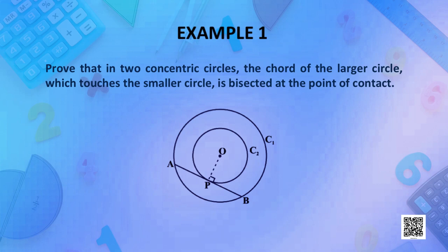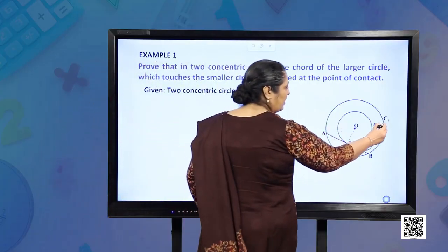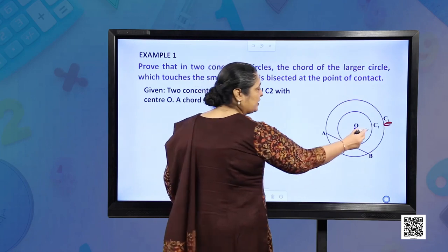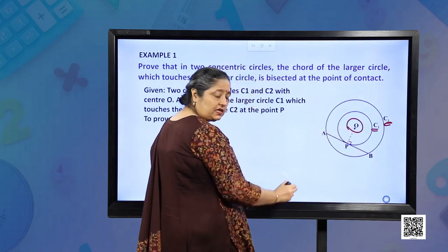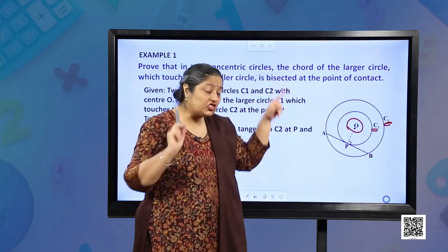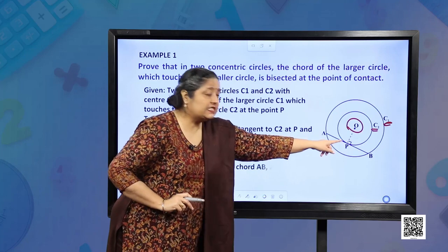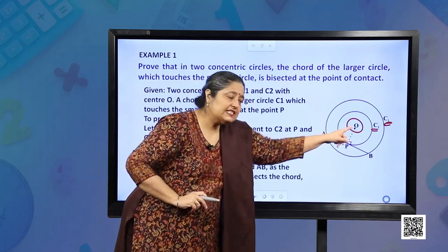We have the first example. Prove that in two concentric circles, the chord of a larger circle which touches the smaller circle is bisected at the point of contact. We have the figure here. We have C1, the larger circle, and C2, the smaller circle. O is the center of the circle. AB is the chord on C1, the larger circle, and P is the point of contact of the tangent AB on C2.